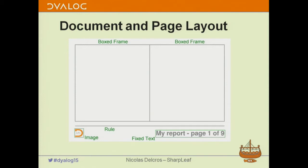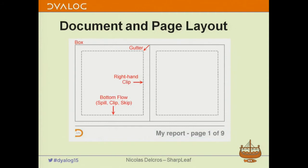The most important items are the frames — that's where everything is going to happen. A frame has a couple of properties: it has a box, which is possibly some kind of edge and possibly some kind of fill. It has a gutter — typically if you have an edge, you don't want anything to happen close to the border. And you also define how the frame will be filled: on the right you can clip or not, and on the bottom you can clip, not clip, or skip to the next frame once you've reached the bottom.